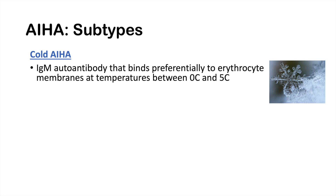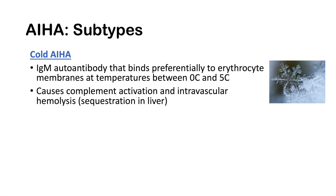The second subtype is cold autoimmune hemolytic anemia, due to an IgM autoantibody that binds preferentially to erythrocyte membranes at temperatures between 0 and 5 degrees Celsius. This is why it's called cold autoimmune hemolytic anemia — the autoantibodies bind best at colder temperatures. It causes complement activation and intravascular hemolysis, with sequestration in the liver, as opposed to warm AIHA which causes extravascular hemolysis.